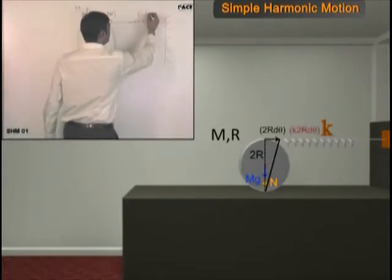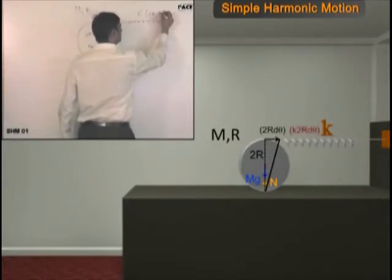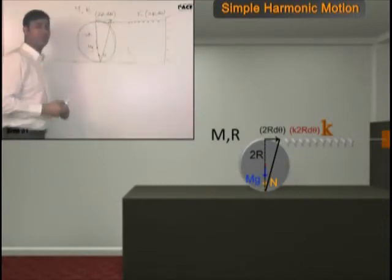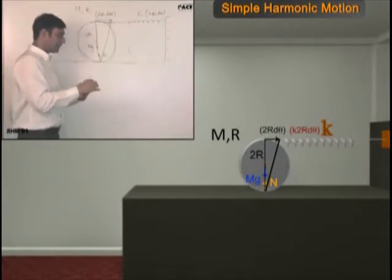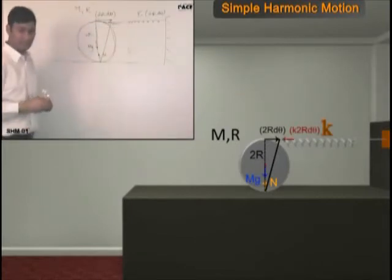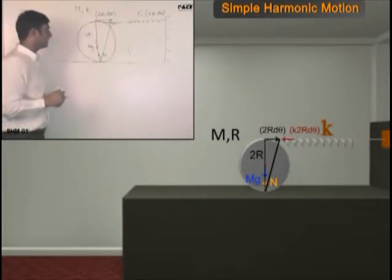What is the force in the spring then? k(2R dθ). This is the force acting in this direction, I am assuming dθ to be very small. And since the spring has been compressed, it is exerting a force in this direction. So spring force is this way.